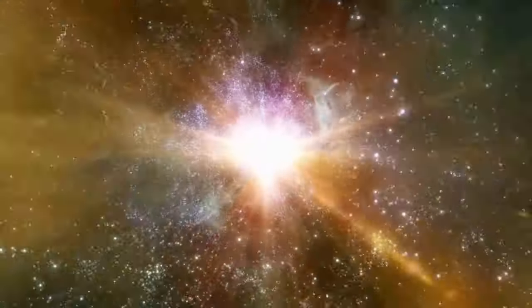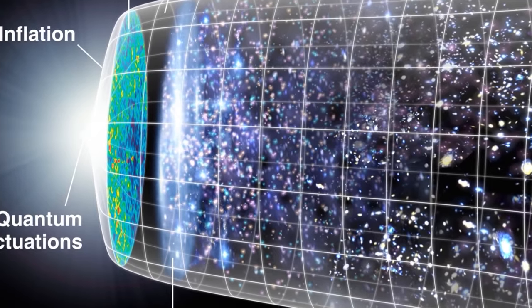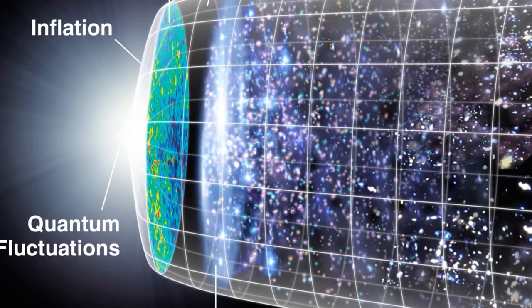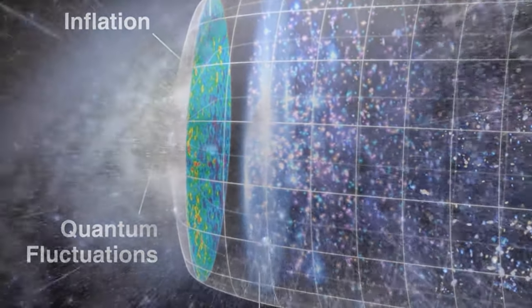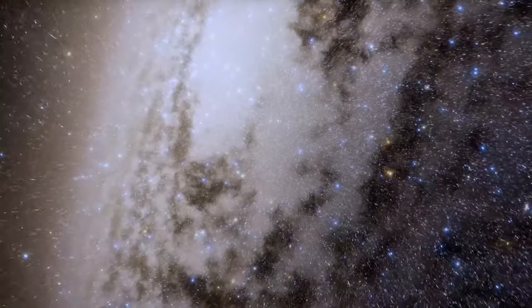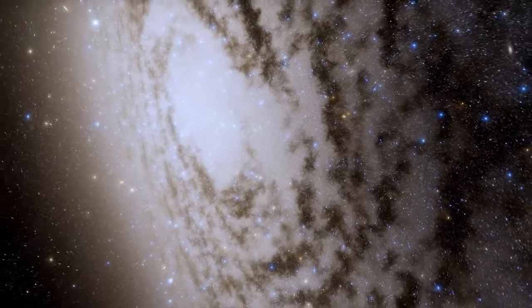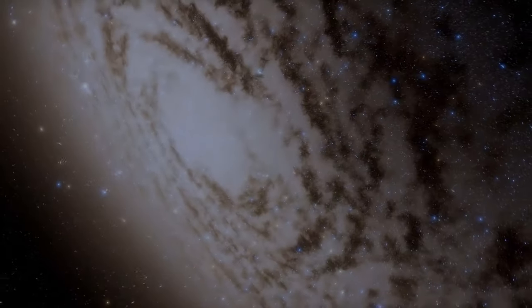A common comparison of the universe is to imagine it as an expanding pie, where the raisins represent galaxies moving away from each other without a central point of origin. However, unlike a pie with a finite boundary, the theoretically eternal universe has no discernible boundary.